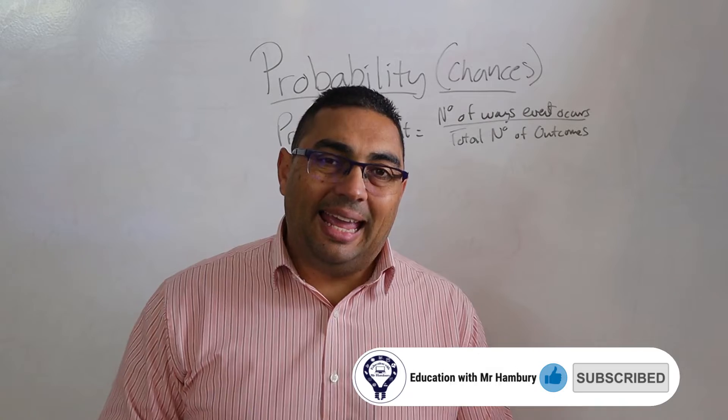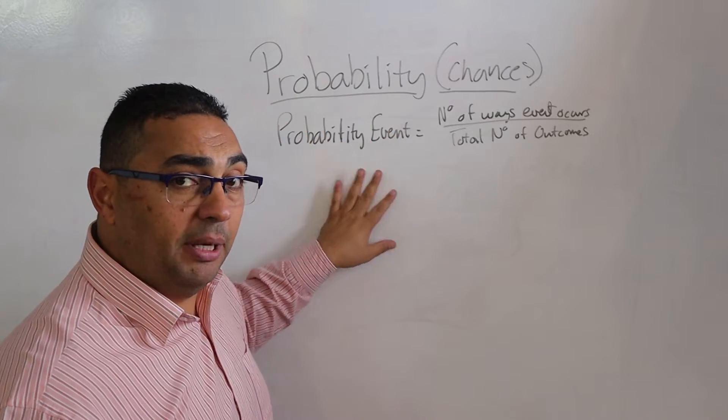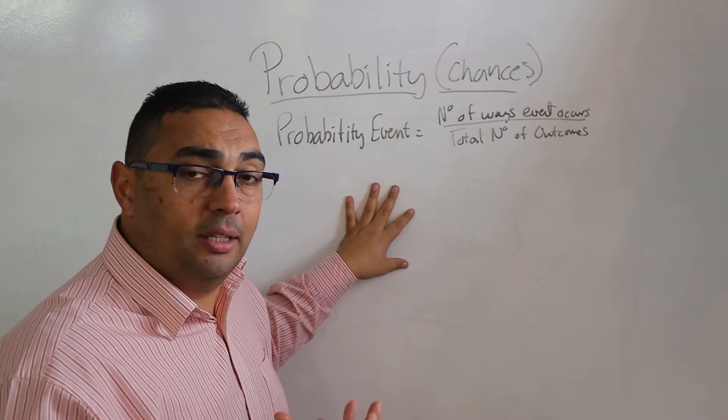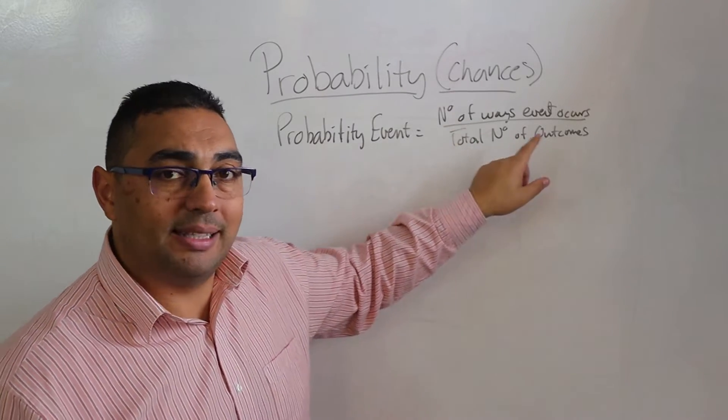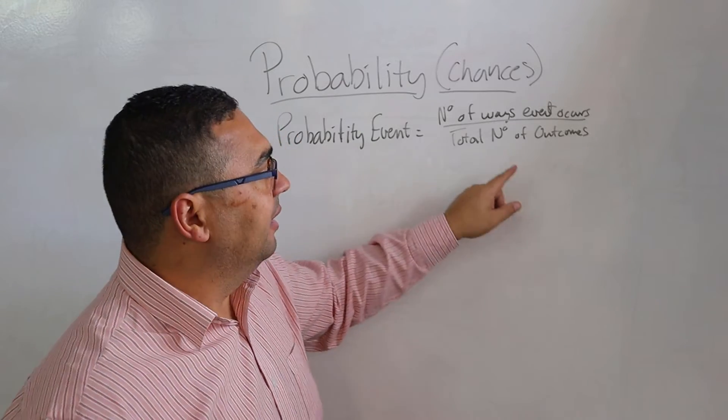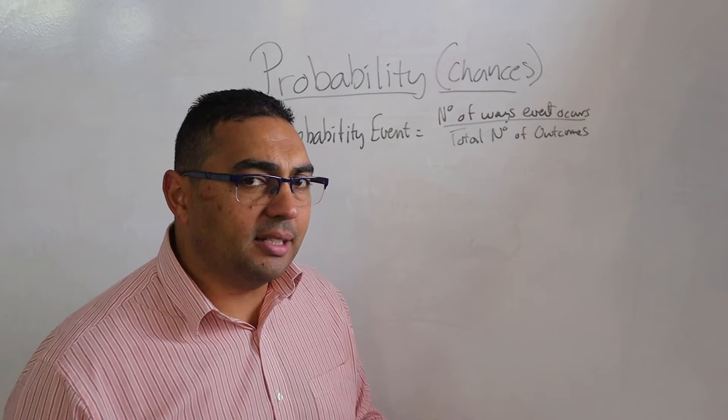Now for probability we have a formula, and the formula is as follows: The probability of an event, whatever it is we are looking to get as an answer, is the number of ways that event occurs divided by the total number of outcomes. So let's illustrate by using a typical example.